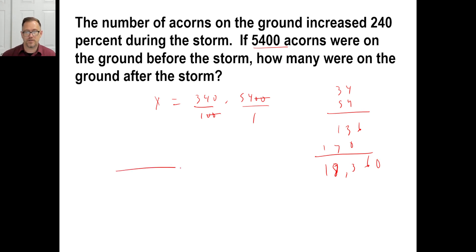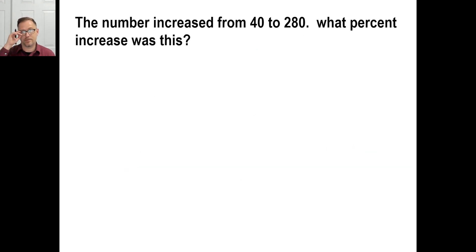And, of course, you could have also done this. That's 340% equals X over 5,400. There you go. Let's try it in B. Pause it and give it a roll.